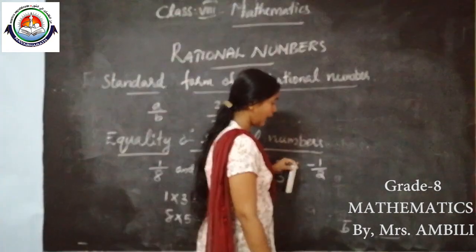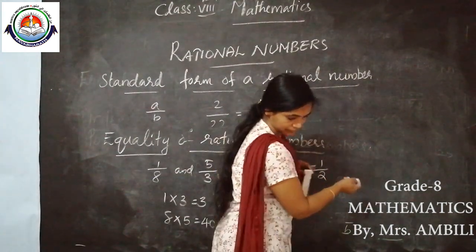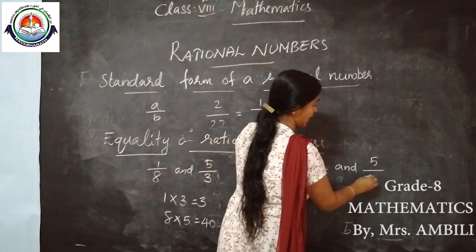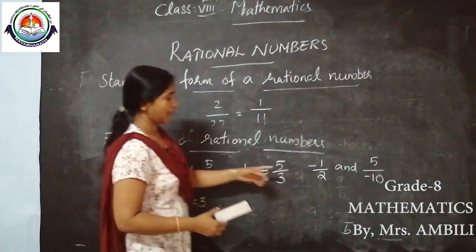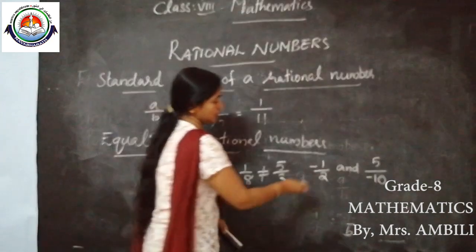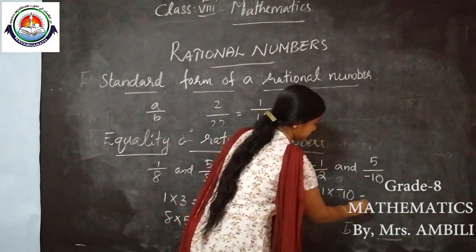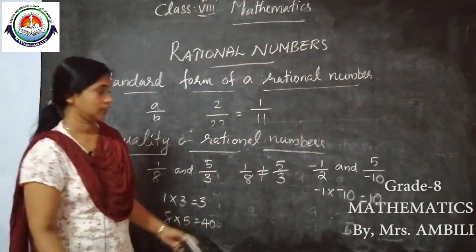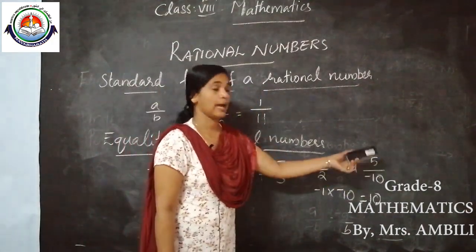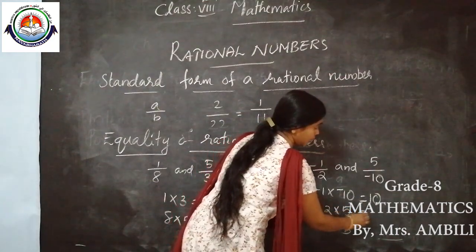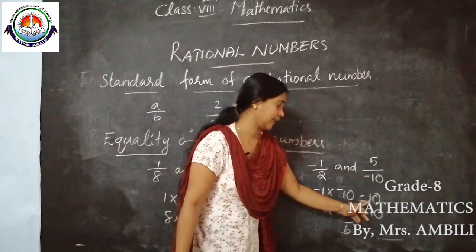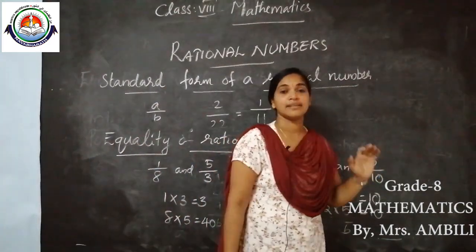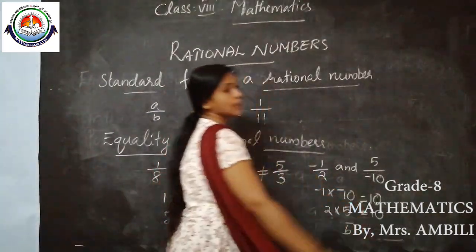We can take another example: −1/2 and 5/(−10). Cross multiply: −1 × (−10) = 10, and 2 × 5 = 10. Both products are equal, so we can say that −1/2 and 5/(−10) are equal rational numbers.